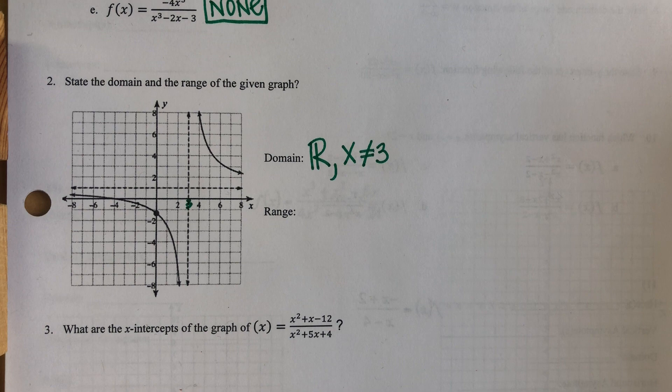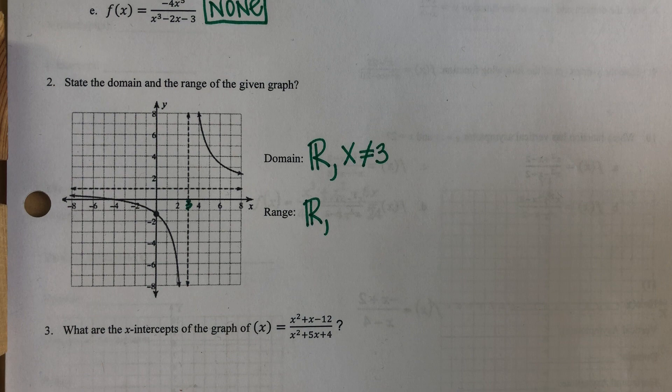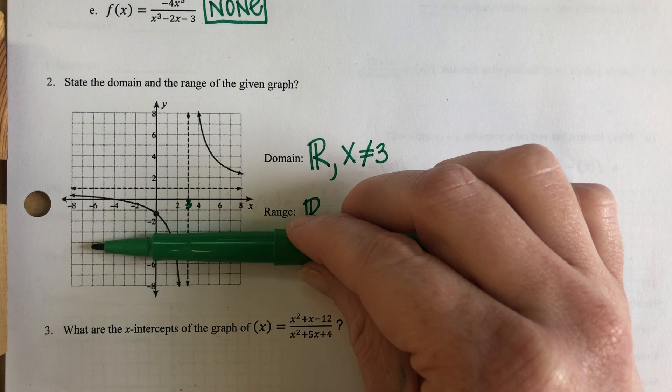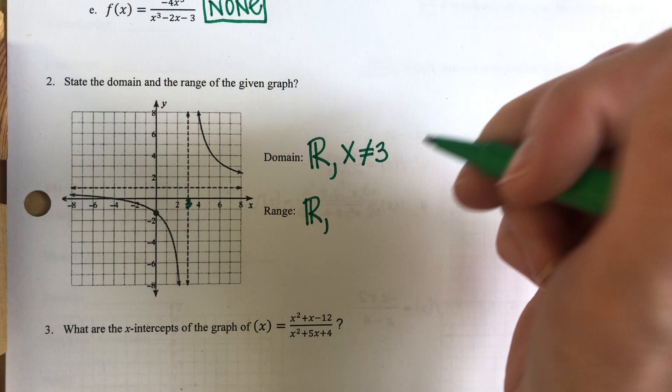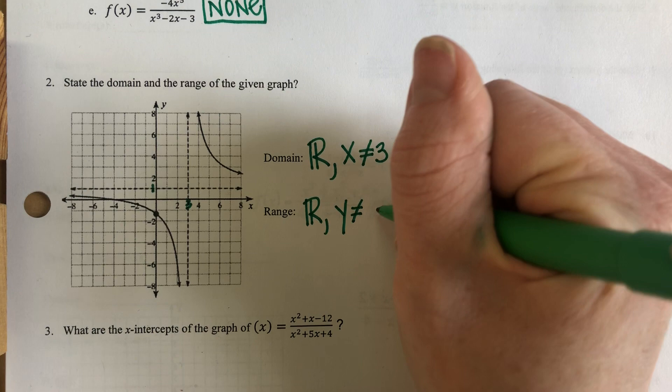Then I'm going to do the same thing for my range. I'm going to write all real numbers, but I've got to restrict my Y values. I see that there is no Y coordinate right here when there's this horizontal dashed line, and that is when my Y value is one. So Y cannot equal one.